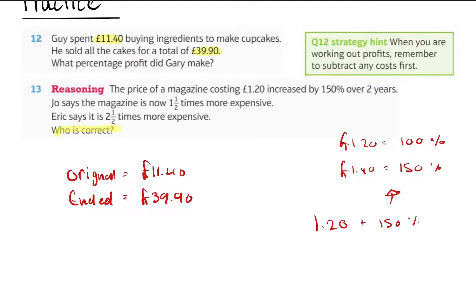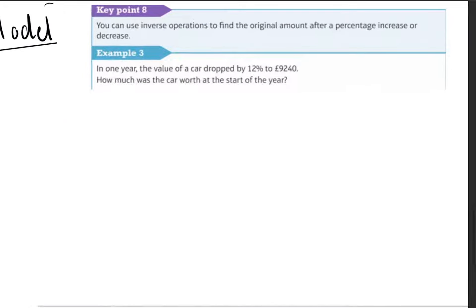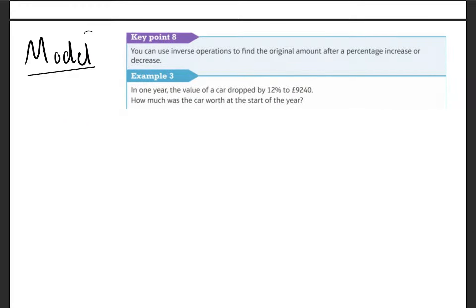Okay, another model you can use: inverse operations to find the original amount. So in one year, a car value dropped by 12%. So 100% minus 12% means it's now worth 88% of the original value.